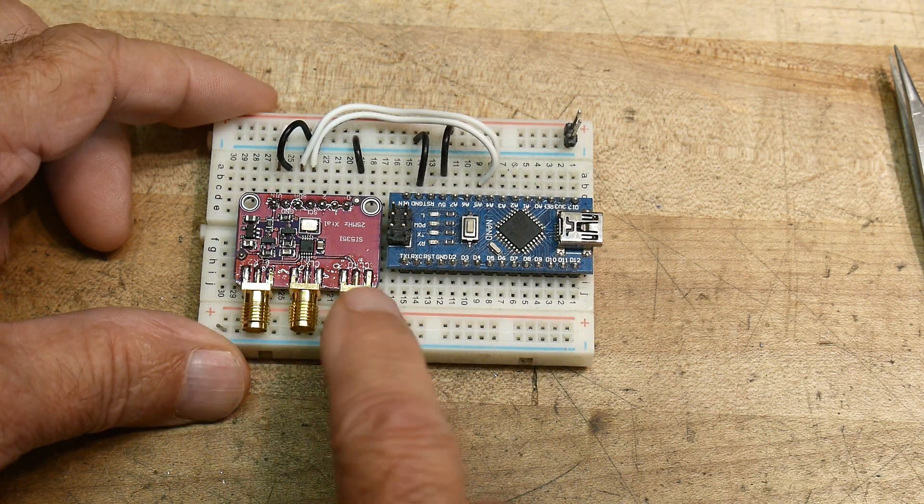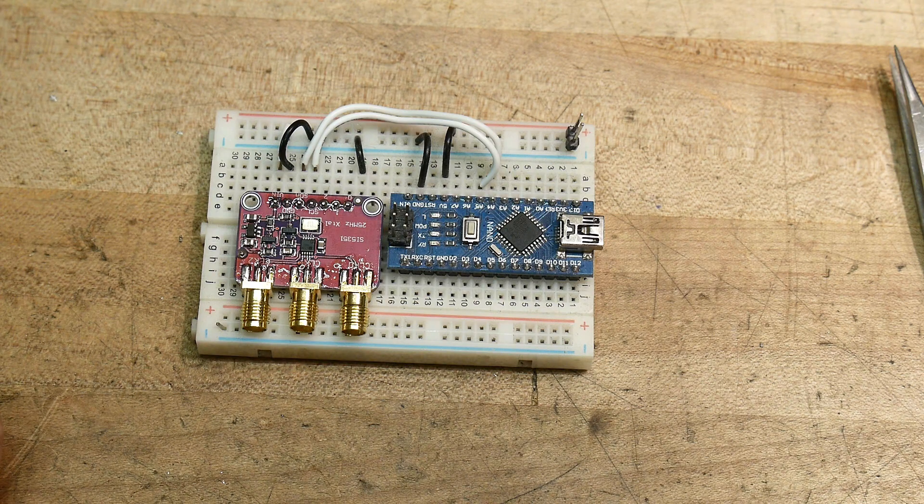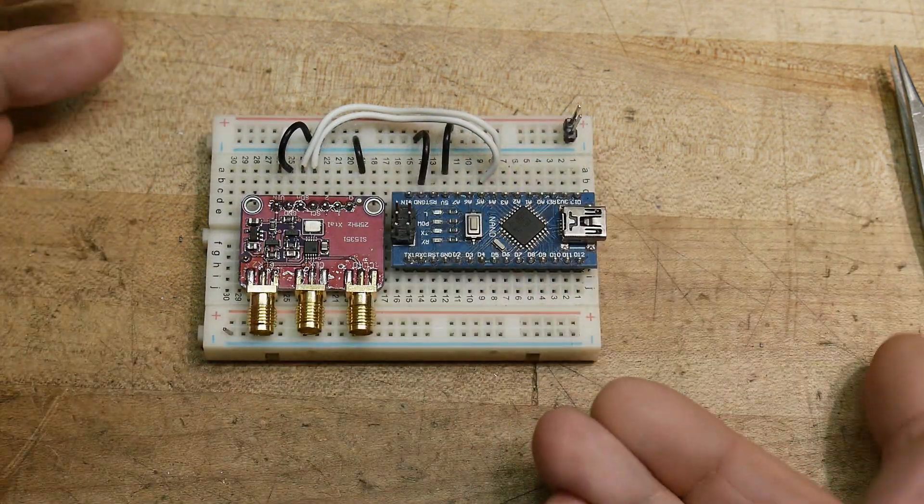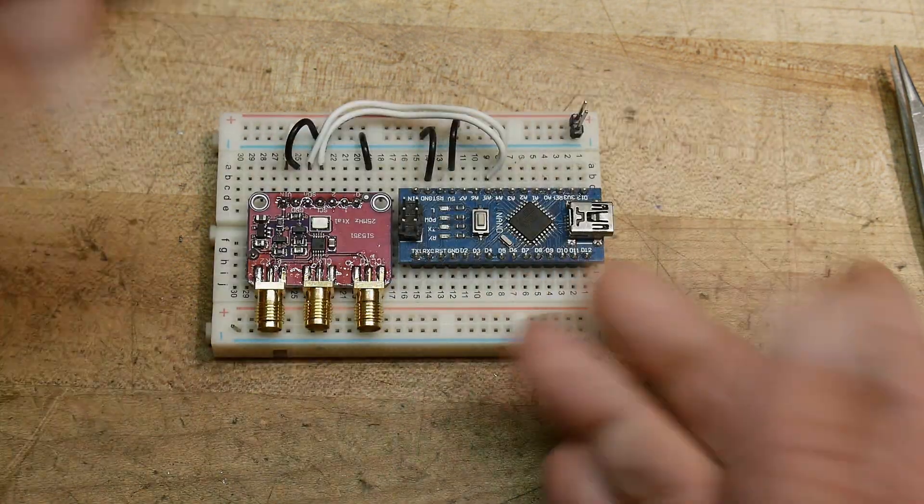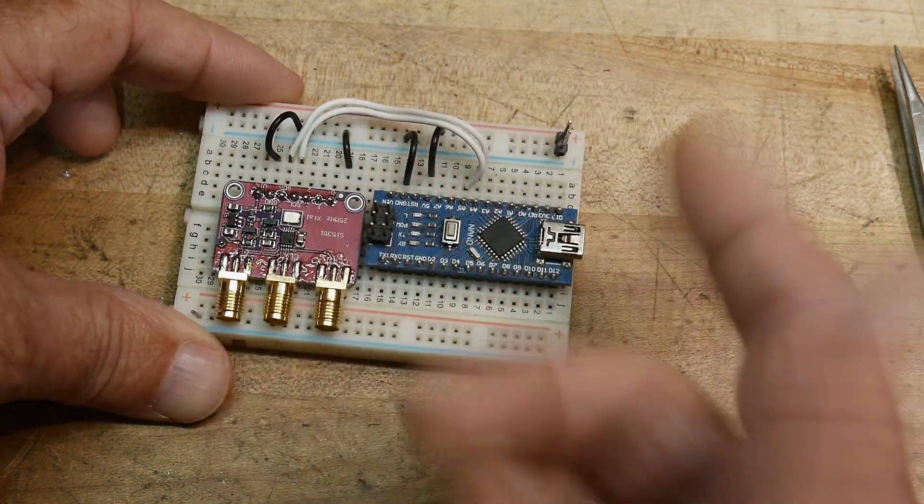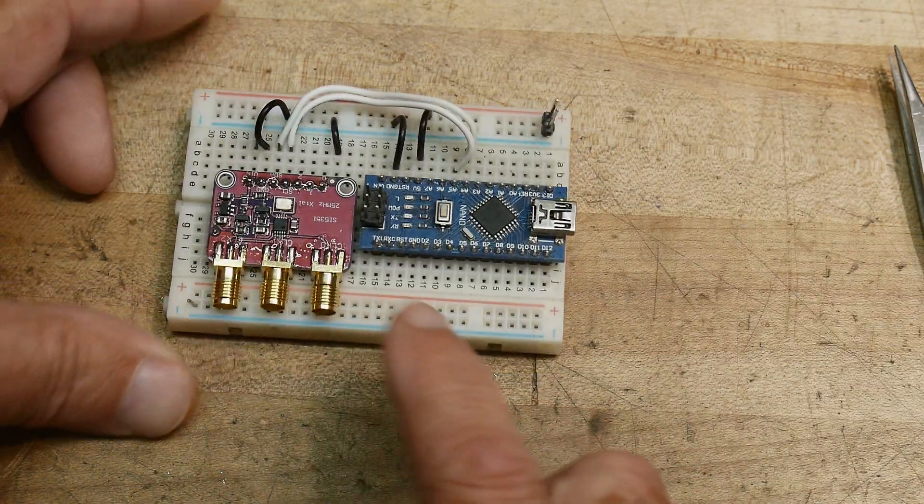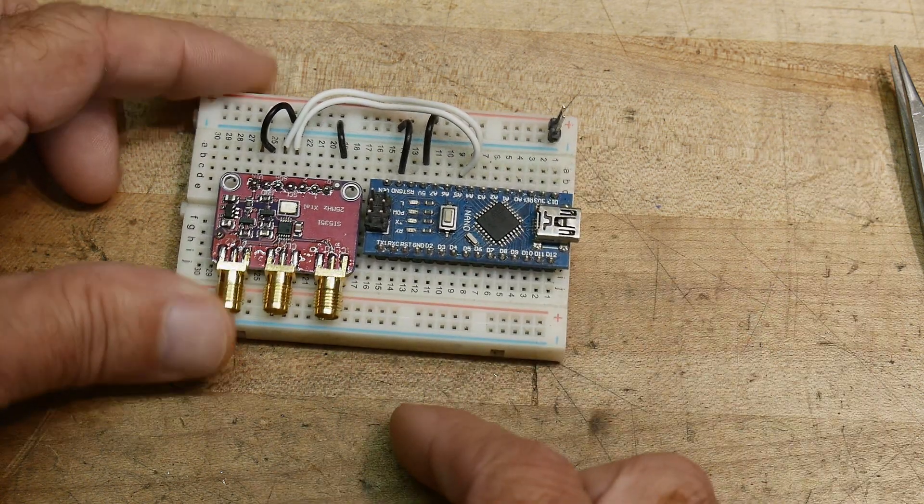It outputs three different clocks. You can program these three different clocks different ways. It's I squared C. So it's very, very easy to build a little prototype board. So I just have two wires, and I'm done, right? And I can generate any clock I want here. And I've got a little Arduino on here.